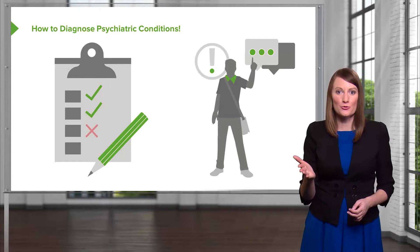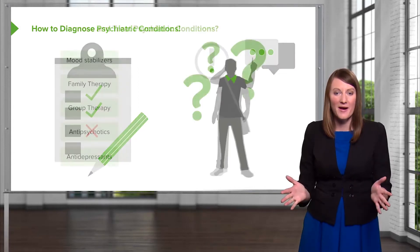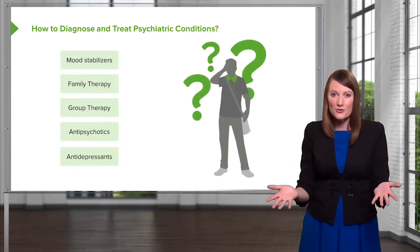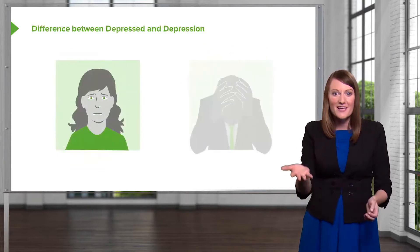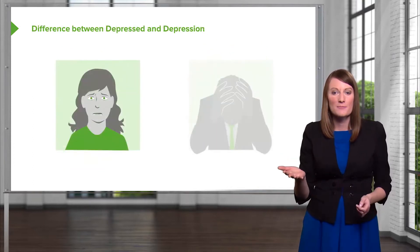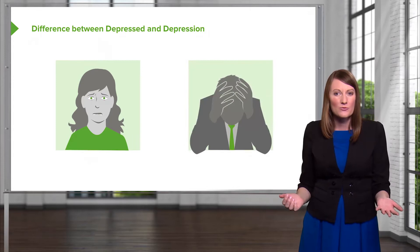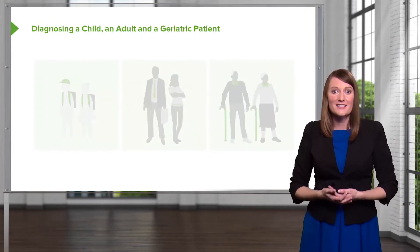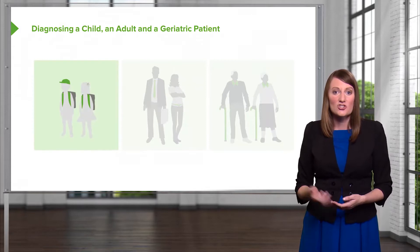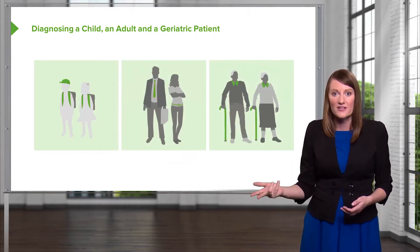You know how to rule out a medical condition, but do you know how to treat the psychiatric condition afterwards? Can you differentiate between a depressed patient and a patient with depression? And do you know the difference in diagnosing a child, an adult, a geriatric patient?